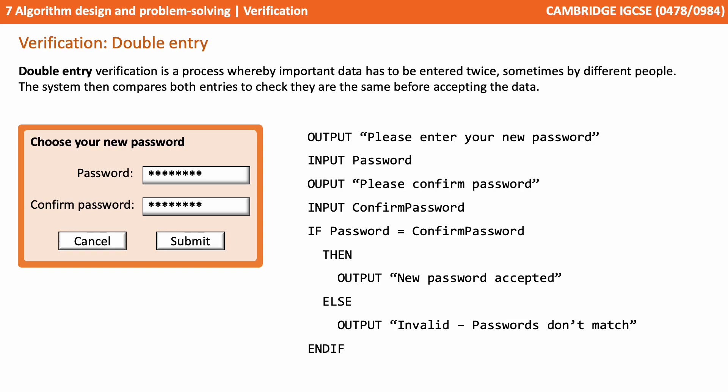A common place you'll have seen this is when you set up or change your password. You're often asked to type it in twice before submitting. Some simple pseudocode here shows how we can ask the user to enter both versions of the password. We then compare them with an if statement, and if both entries don't match, we can tell them.